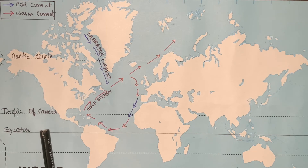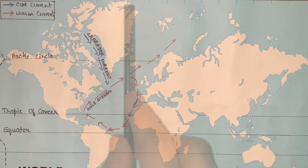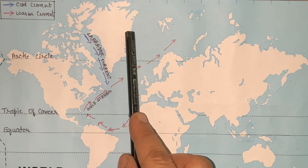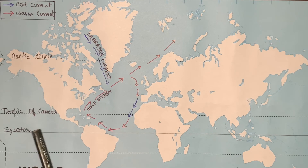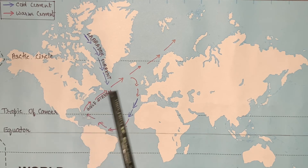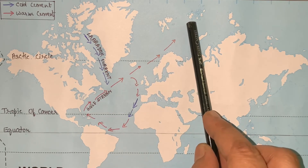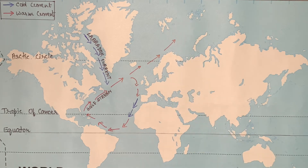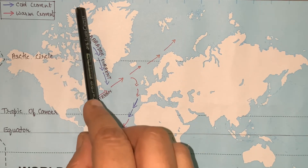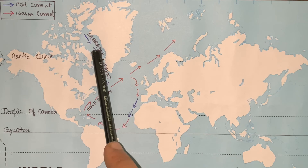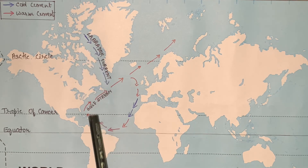And just opposite, on the poles, the lower the temperature, the higher the density of water will be. As a result of this, the hotter and lighter water from the equator moves towards the poles, whereas the colder and denser water from the polar areas comes towards the equator.